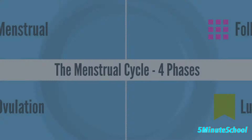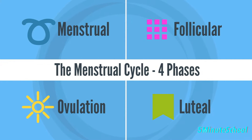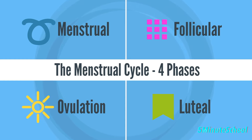The menstrual cycle can be divided into four phases: the menstrual phase, the follicular phase, the ovulation phase, and the luteal phase.